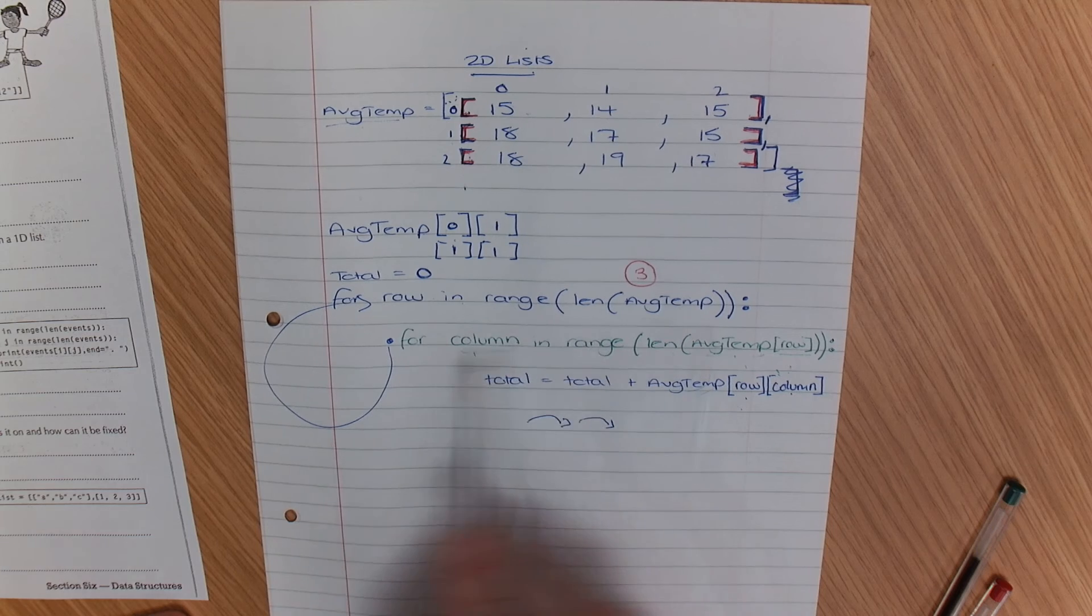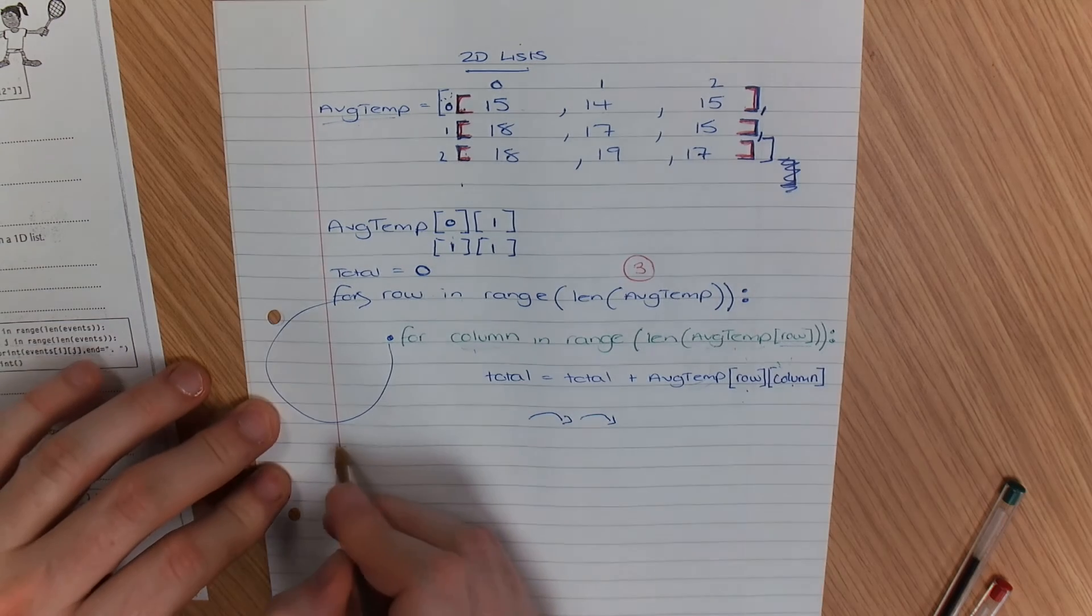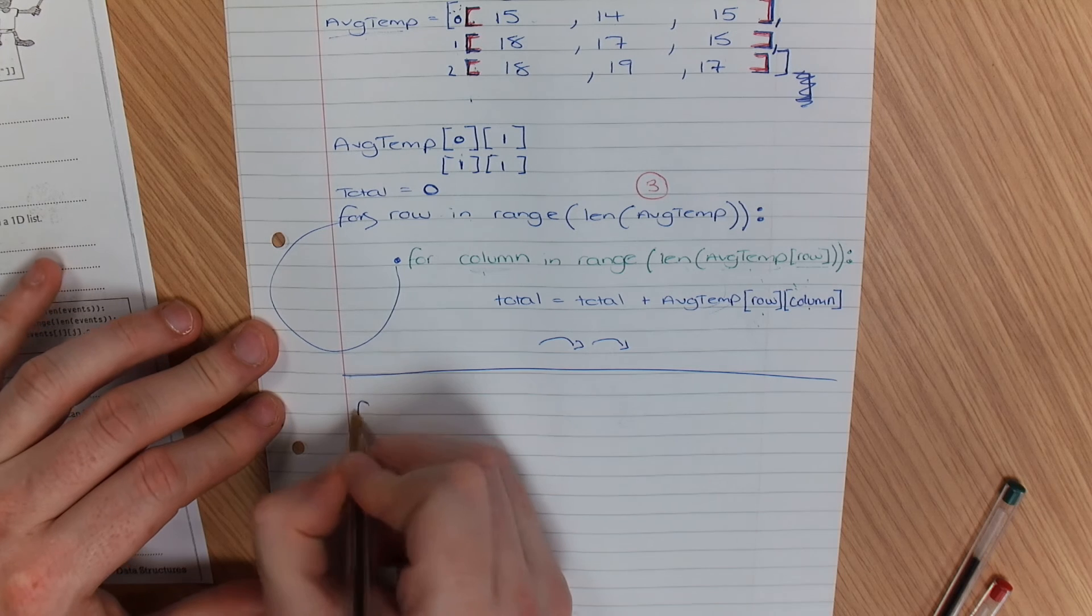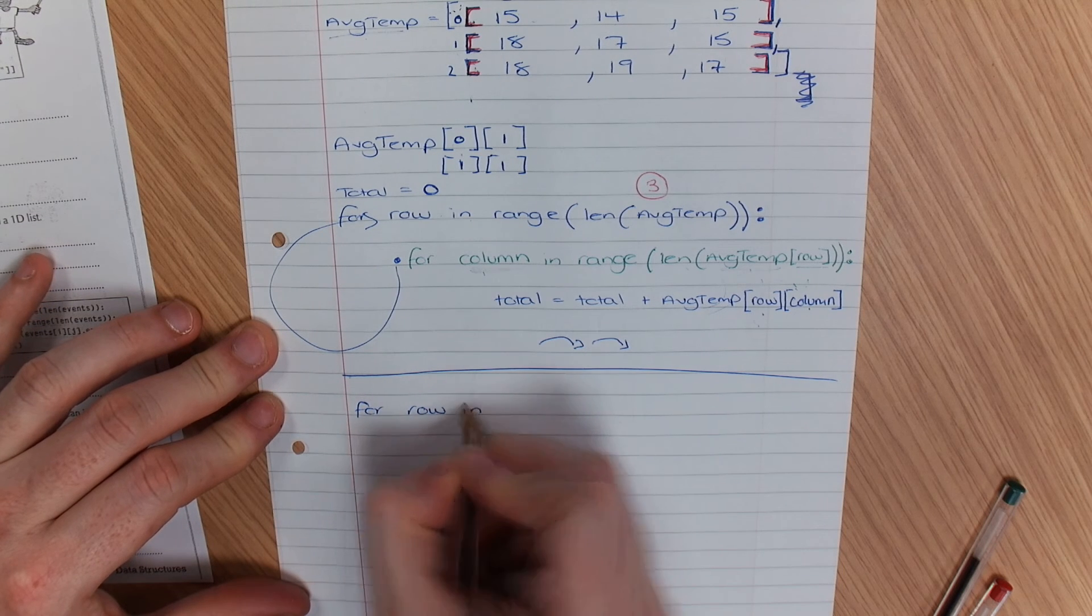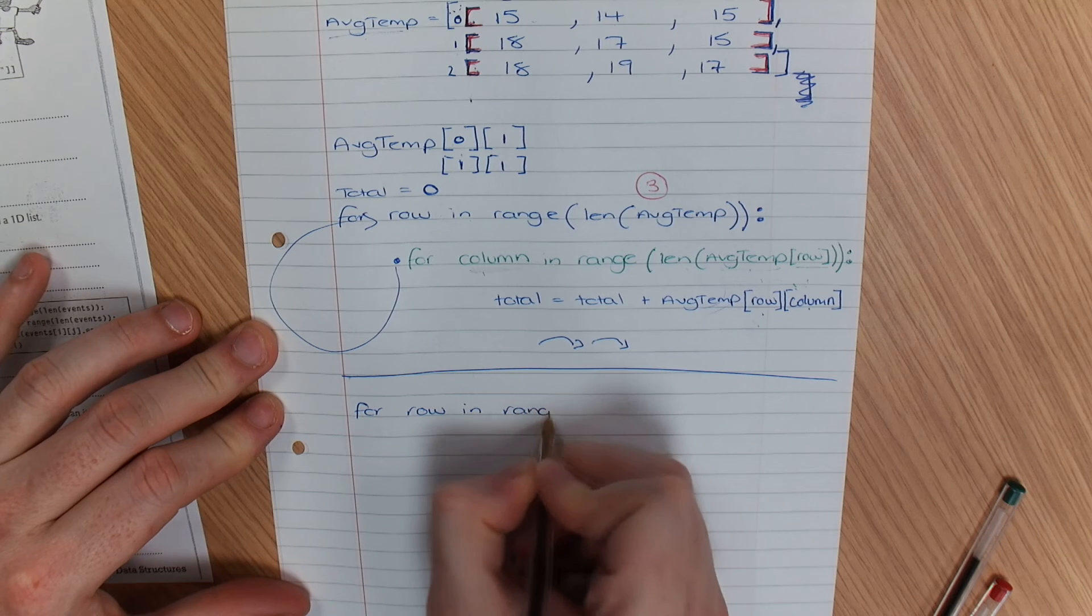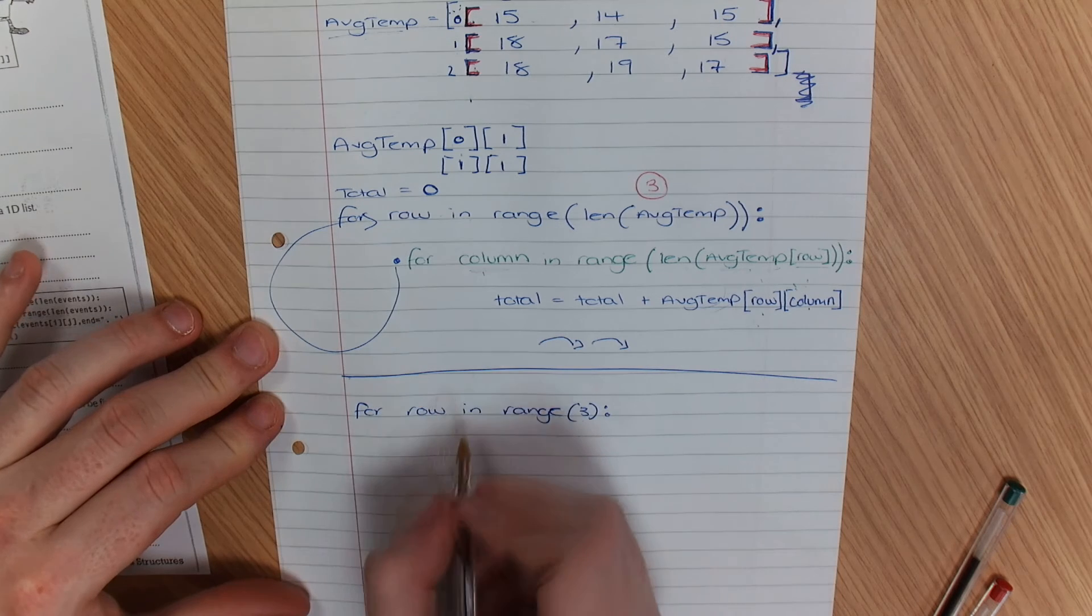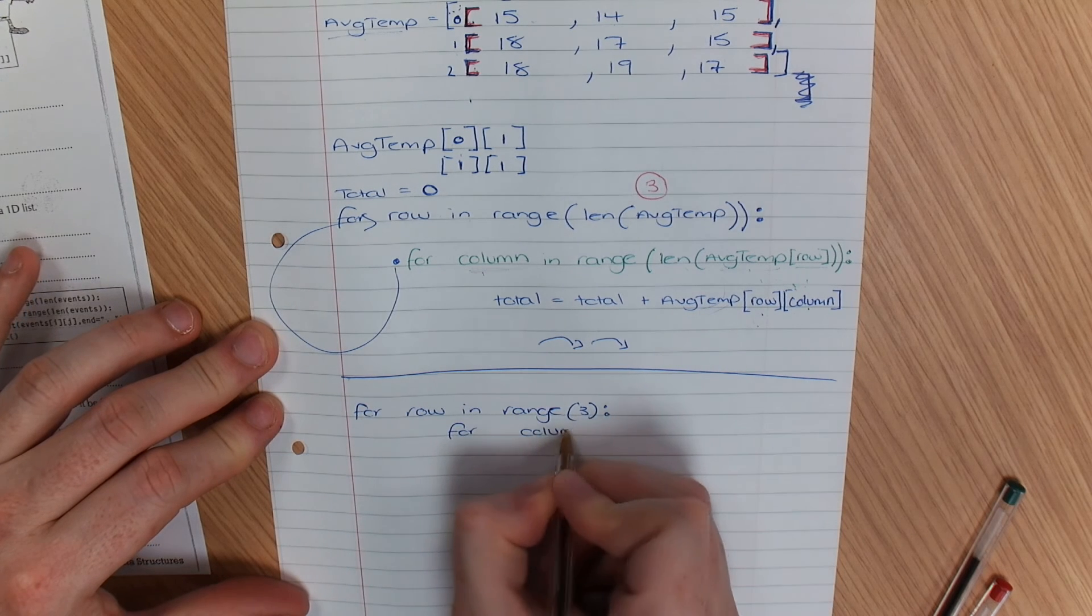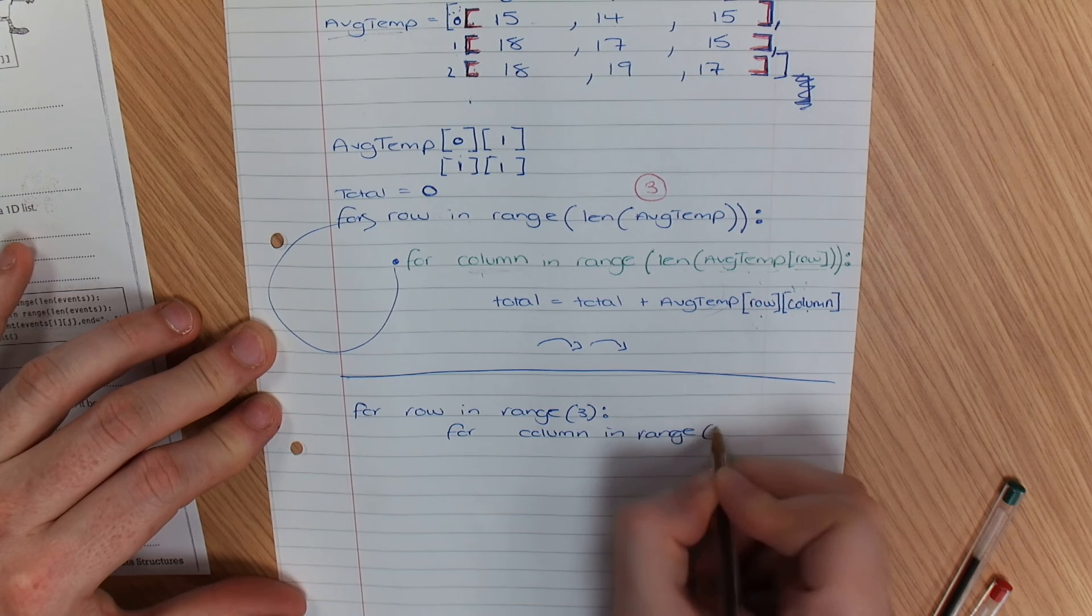So there is another way, a simpler way to do it. You could always, if you know the items, just go for row in range three, because I know there's three rows, for column in range three.